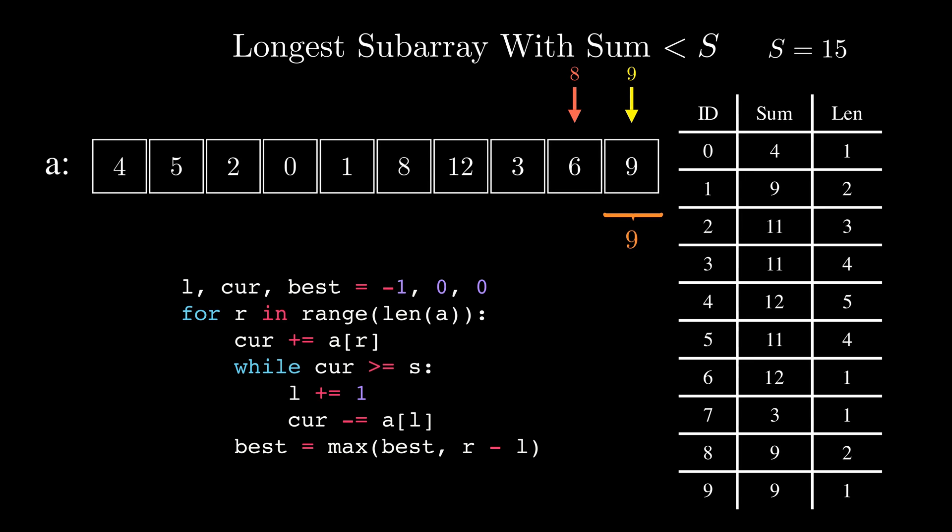Notice how each element entered the window and left the window at most once. This is an easy way of showing that the algorithm actually performed O of n operations to find the best answer as each of the elements was part of some computation at most twice. One when adding them to the current sum and one when subtracting them. That's the beauty of the sliding window technique.